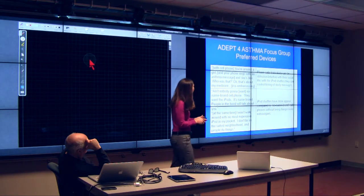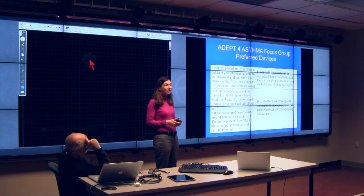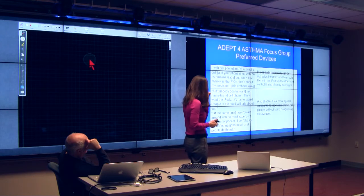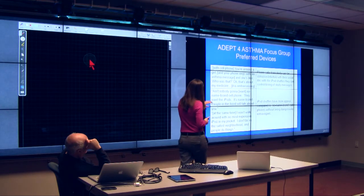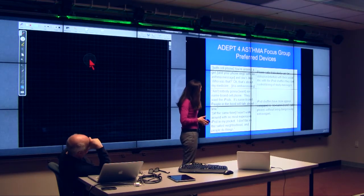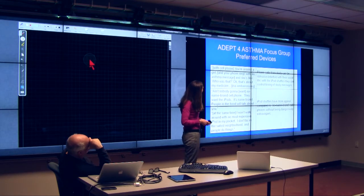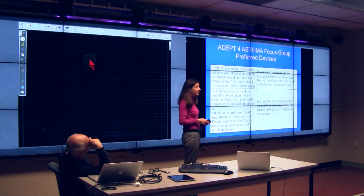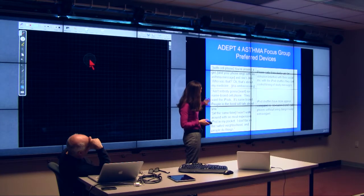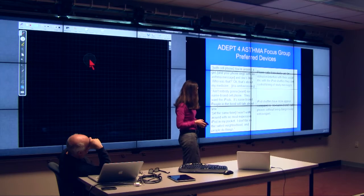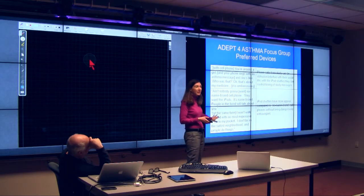Then we asked them, what kind of device do you want? Do you want a cell phone? Do you want an MP3 player? And here's some of their quotes. With the cell phone, you're around a girl and your phone rings with an asthma message and she's like, who was that? Oh, that's about my medicine. It's embarrassing. Ain't nobody going to want no name brand cell phone. They want the iPods. It's name brand. People in the hood will talk about you. At the same time, I won't want to walk around with the most expensive iPod in my pocket. I don't be in the safest neighborhoods if people do things.